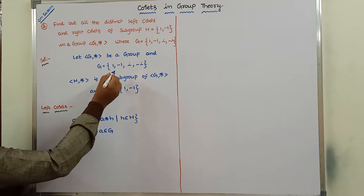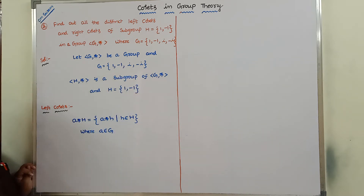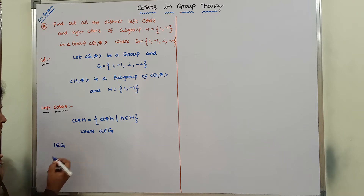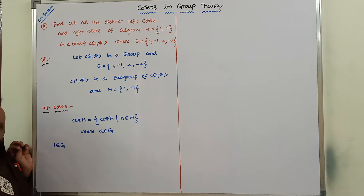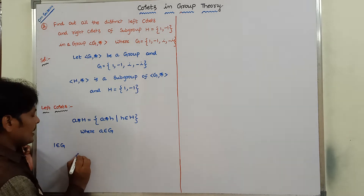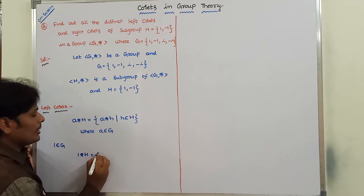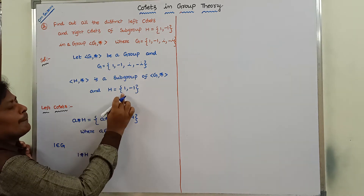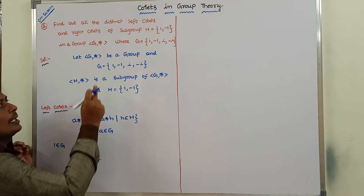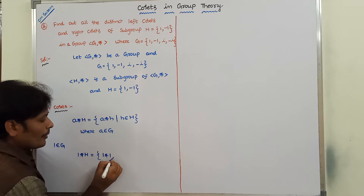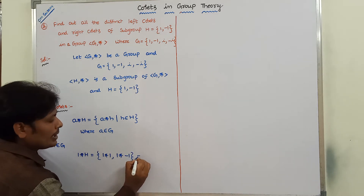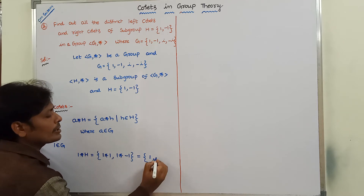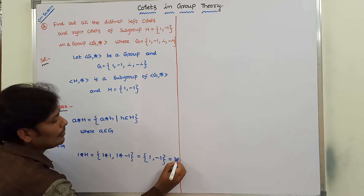There are 4 elements in G: 1, -1, i, -i. First, I am taking element 1 of G. Element 1 is multiplied with all the elements of subgroup H to form the left co-set. So, 1*H = {1*1, 1*(-1)} = {1, -1} = H.